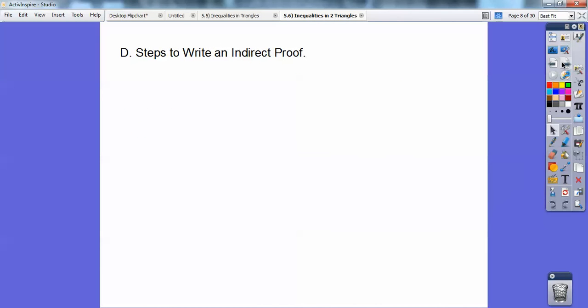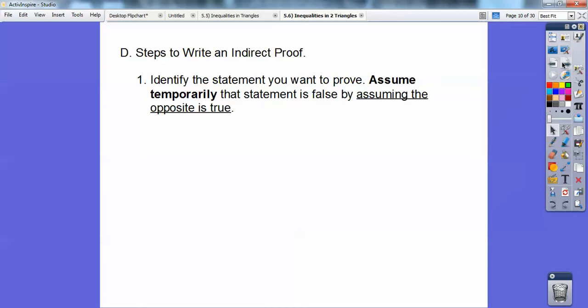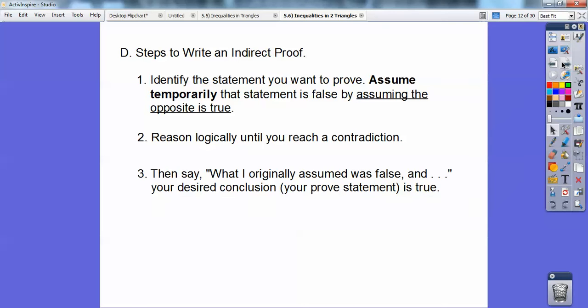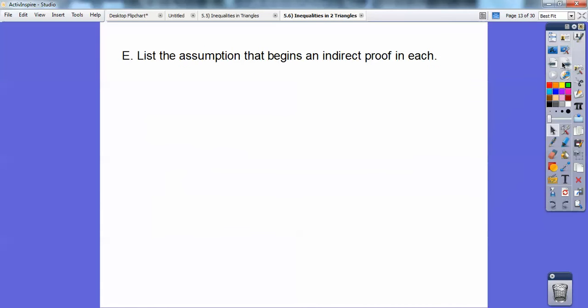Steps to writing an indirect proof. So, identify the statement that you want to prove. You know how they always give you the given part and the prove part? So locate the prove part. And then you assume temporarily that that prove part statement is false by assuming the opposite is true. And then you're going to reason logically through your proof until you reach a contradiction. Then you say, after you get to your contradiction, what I originally assumed was false, and your desired conclusion, whatever you're trying to prove, has to be true.